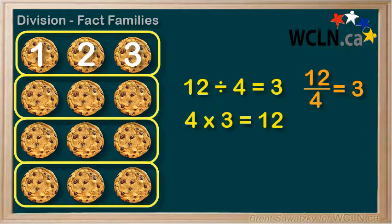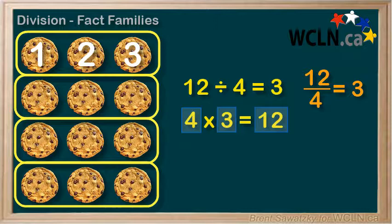And again, thinking back to multiplication, if we knew that we had 4 friends, and each friend had 3 cookies, we recall that we could multiply them to know that we had a total of 12 cookies. 4 friends times 3 cookies per friend equals a total of 12 cookies.